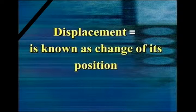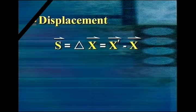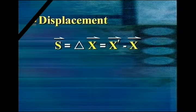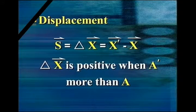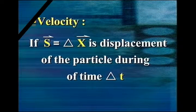Displacement is known as a change of its position. Remember, there is a difference between displacement and distance. Displacement is symbolized as a vector: delta X equals X dash vector minus X vector. Delta X is positive when A dash is greater than A.